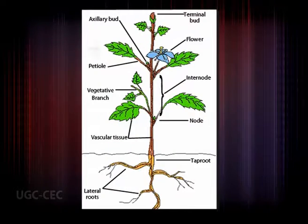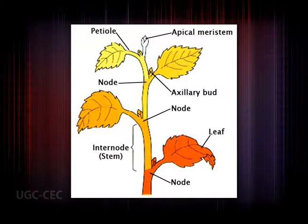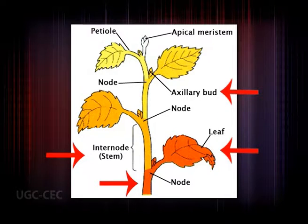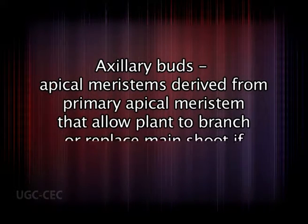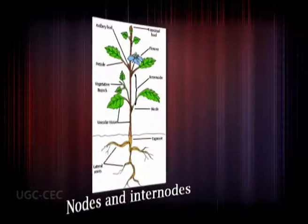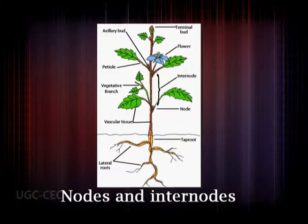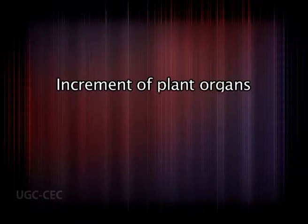Growth of the shoot occurs at the tip, where a group of relatively actively dividing cells called the shoot apical meristem is present. This meristem produces leaves, axillary parts, nodes, and internodes during the vegetative phase. The reiterative unit of the vegetative shoot consists of the internode, node, leaf, and axillary parts. Axillary buds derived from the primary apical meristem allow the plant to branch or replace the main shoot if damaged by an herbivore.